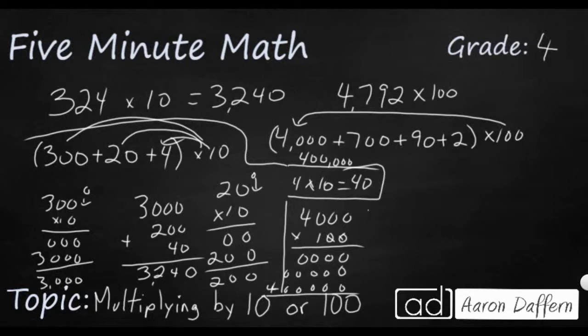Here's the shortcut. If you're going to multiply 4,000 times 100, count your zeros. I've got 5 zeros. Multiply the two non-zero numbers, 1 times 4. So 1 times 4 is 4 with 5 zeros. There's my 400,000.